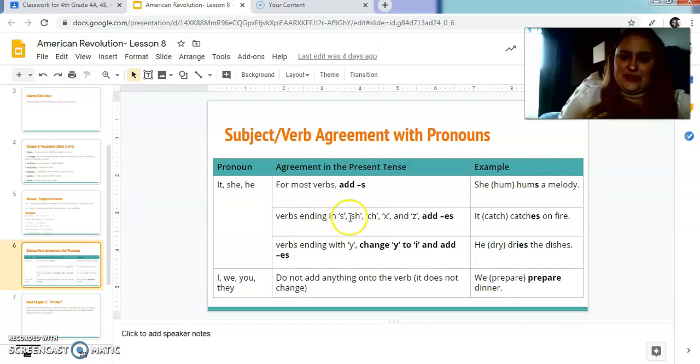Remember that if something ends in S, S, H, C, H, X, or Z, I add ES. So it catch on fire. It catches on fire. Can't just add an S. It would look weird. Anything that ends with a Y, you change the Y to the I and add ES. So he dry, he dries the dishes. Remember, this is only for singular pronouns. So only when we're talking about one person or thing.